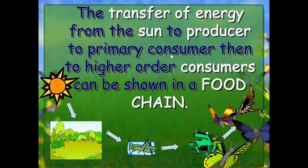The transfer of energy from the sun to producer to primary consumer and then to higher order consumers can be shown in a food chain. Energy comes from the sun, plants use it to grow, a grasshopper eats the plants, a frog eats the grasshopper, and a hawk eats the frog. That same sun's energy is being passed on through each level, though it decreases a lot at each level.